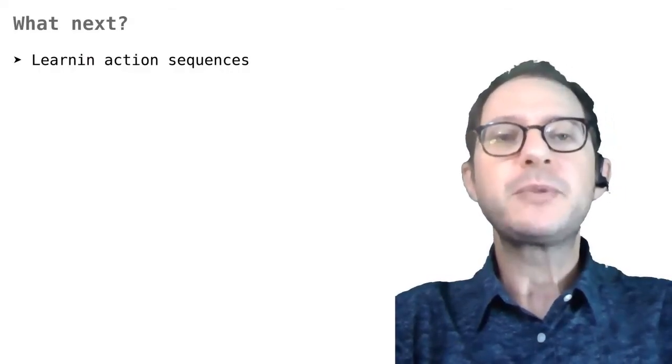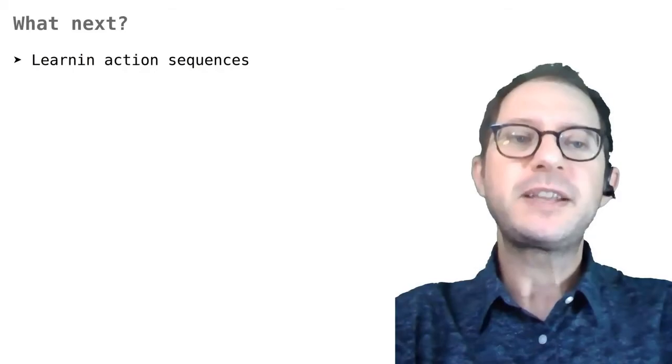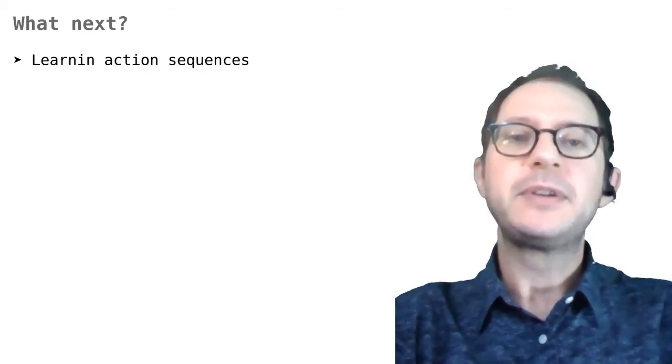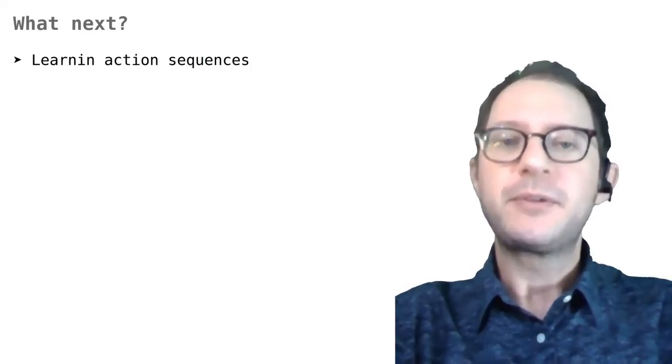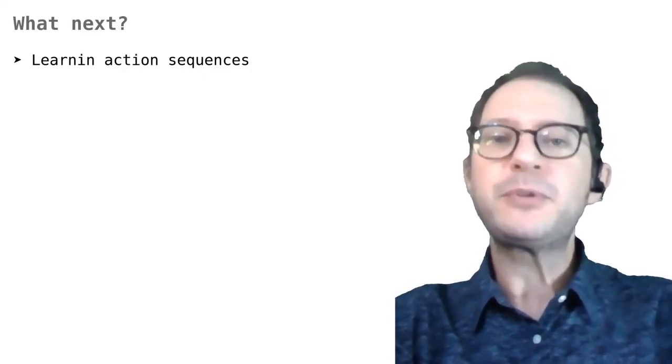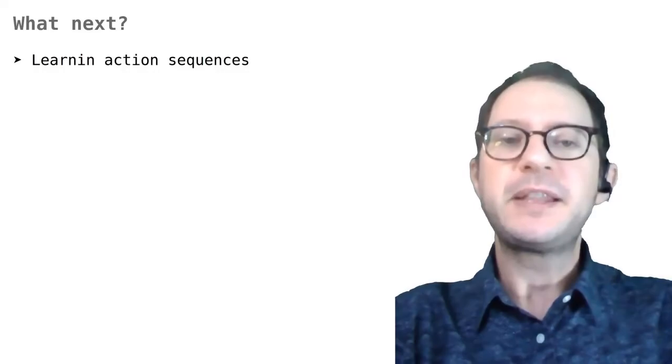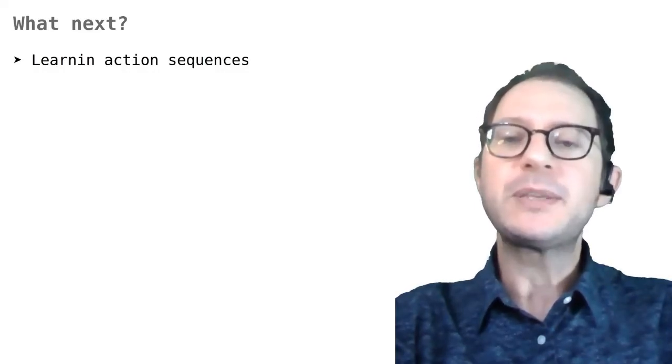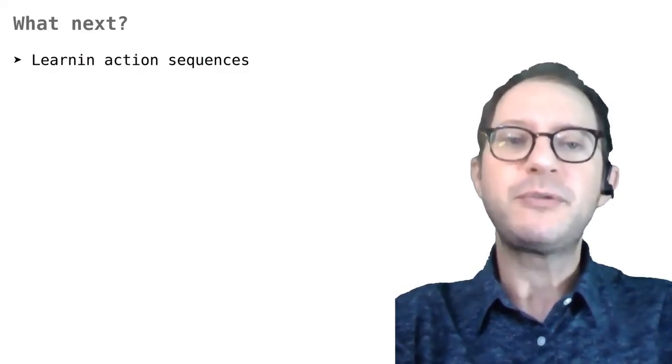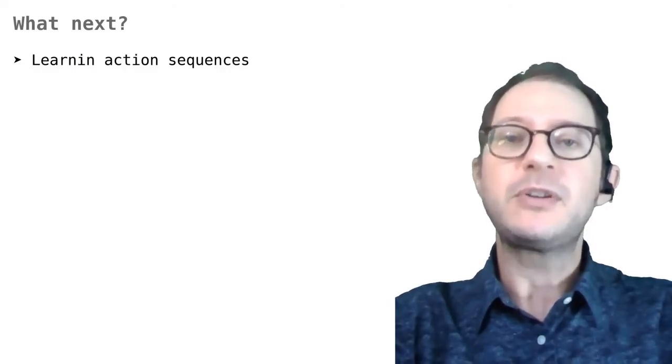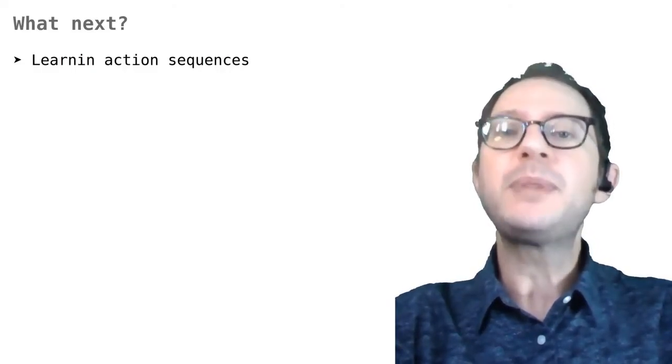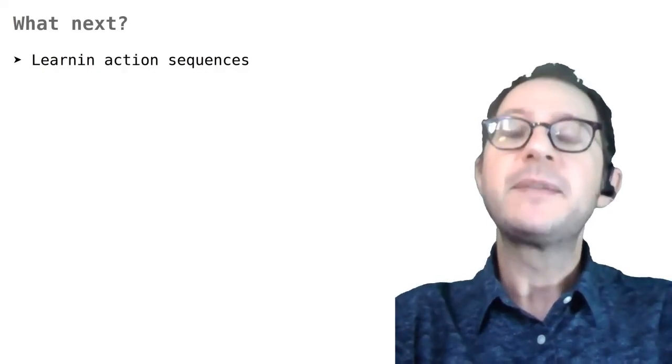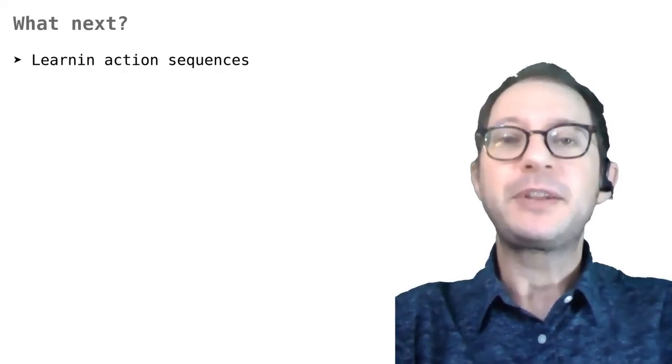So in this short lesson, we reinterpreted the associative strength of stimuli as their value, or more precisely, as the animal's understanding of their value. Right now, this looks just like a different way to say the same thing, but in the next lesson, we will see how the concept of learned value or conditioned reinforcement, as it is also called, is important in understanding how animals learn complex sequences of actions. This lesson is over. Happy learning to everyone!